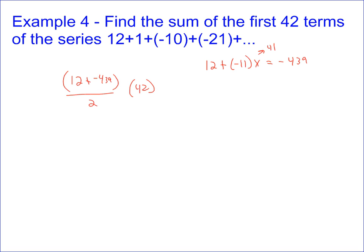So you end up with 12 plus negative 439, and you get negative 427. You divide that by 2, and then you multiply by 42, and you find out that the sum of this sequence is negative 8,967. By following the formula, using our algebra we learned about sequences, we can very easily find the sum of any arithmetic sequence.